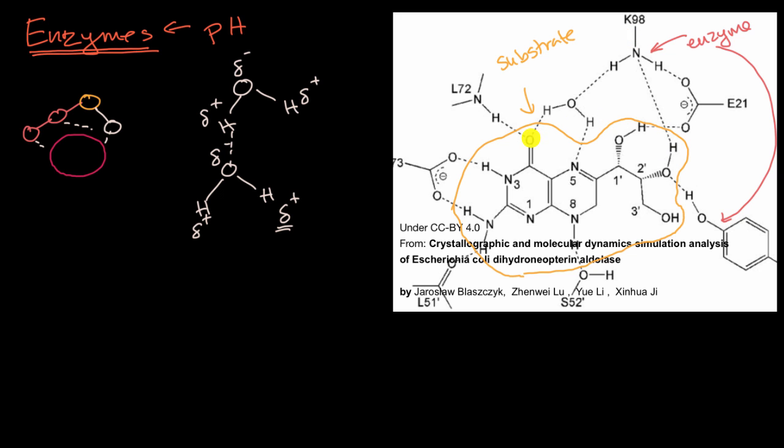So you can see a hydrogen bond between a hydrogen and a nitrogen, a hydrogen bond between an oxygen and a hydrogen. The yellow part is the substrate, and all the stuff that's wrapping around it, that is the enzyme itself.